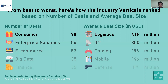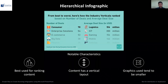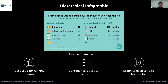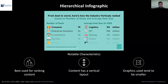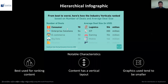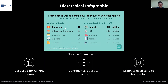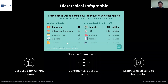For list infographics, we can even go one step further and make it into a hierarchical infographic. This means information is organized in hierarchical order, maybe from best to worst or number one to last in the category. It's useful for ranking content. You'll notice you want to use a vertical layout so that it's easier for your audience to follow which is the top and which is the bottom.